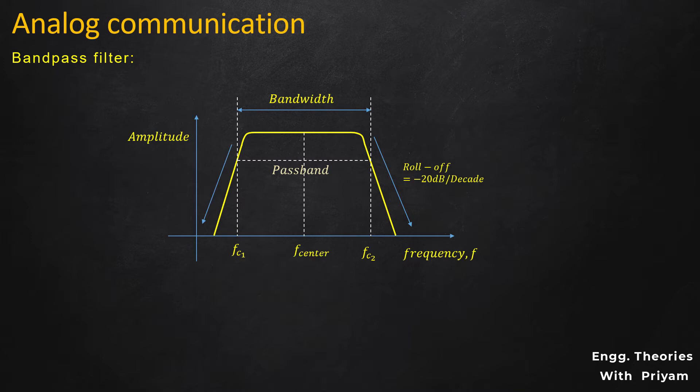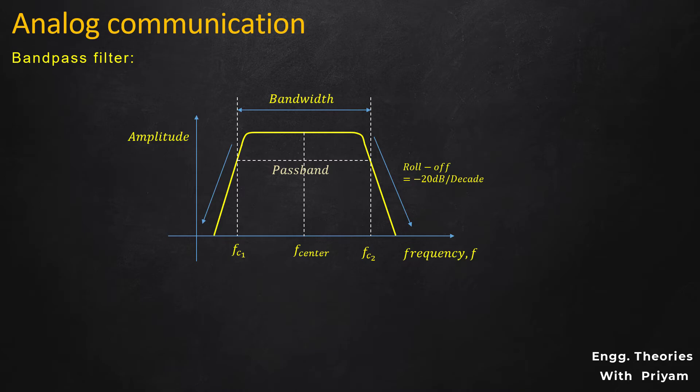In practical form, the edges of the bandpass filter at the two cutoff frequencies are not sharp — instead they are slightly tilted. Due to this, we cannot properly recover either of the sidebands from the DSB-SC modulated signal using this bandpass filter. Let's see what happens when we try to recover either sideband from the DSB-SC modulated signal using this bandpass filter.